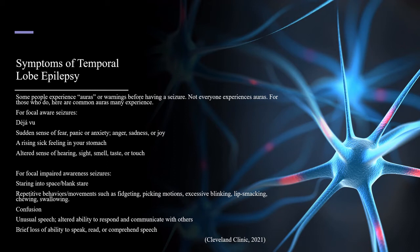For focal impaired awareness seizures, symptoms include staring into space or a blank stare, repetitive behaviors, movements such as fidgeting, picky motions, excessive blinking, lip smacking, chewing, swallowing, confusion, unusual speech, altered ability to respond and communicate with others, and brief loss of ability to speak, read, or comprehend speech. Do you experience auras? Share what you experience in the comments section below.